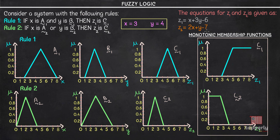In the case of the Sugeno method, the output of the consequent should be a function of the inputs as given in the antecedent, which is why the equations for z1 and z2 are provided in the question. We have also been provided with the fuzzy sets a1, b1, c1 and a2, b2, c2, where mu in all cases represents the membership value. Additionally, the monotonic membership functions of the consequent are given, as required for the Tsukamoto model.